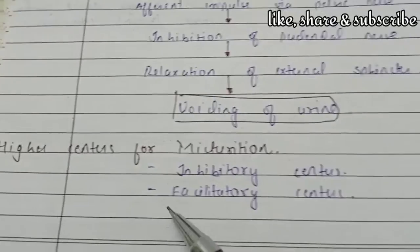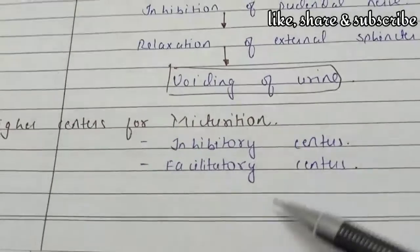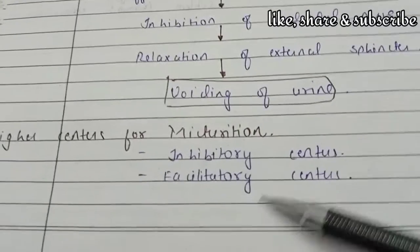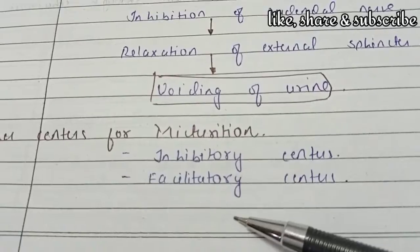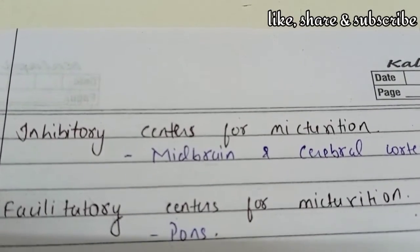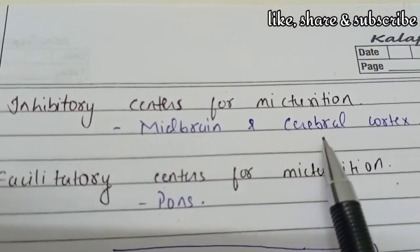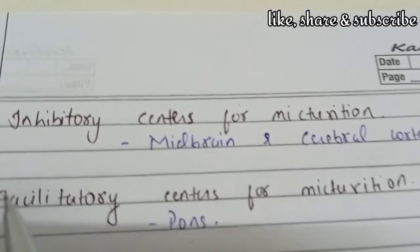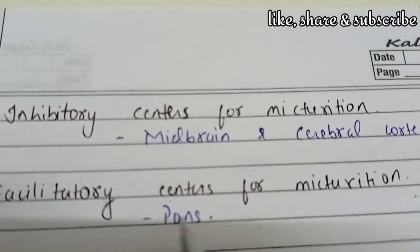So, higher centers for Micturation. Higher centers are two: Inhibitory and Facilatory. The Inhibitory center for Micturation is the midbrain and cerebral cortex. The Facilatory center is the pons.